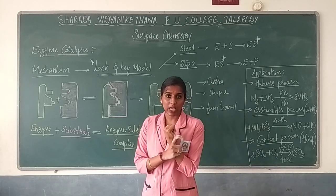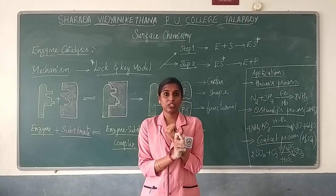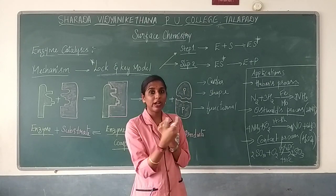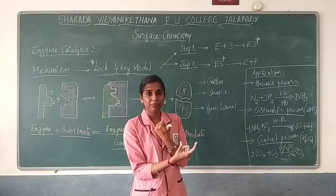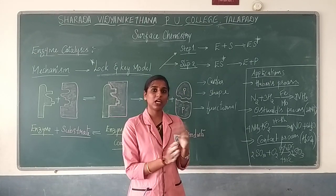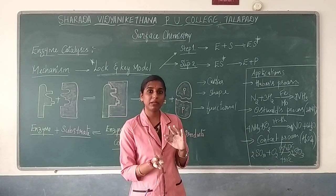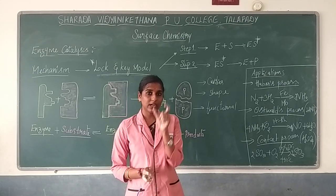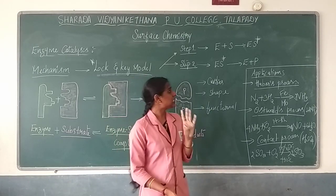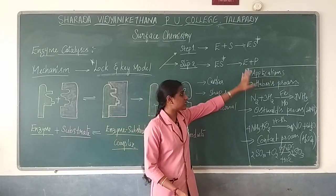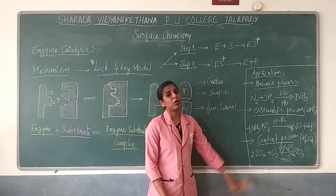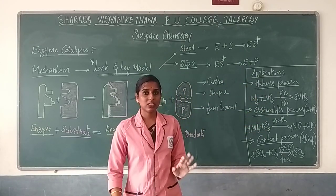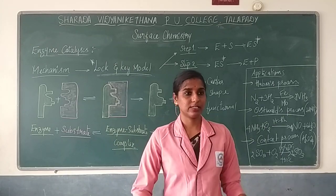Another simple example of industrial application is the hydrogenation of vegetable oil, which converts it into vegetable ghee, called vanaspati. The conversion of oil to ghee is done in the presence of a nickel catalyst. That is also an industrial application. So these four applications are very important under the topic of catalysts.